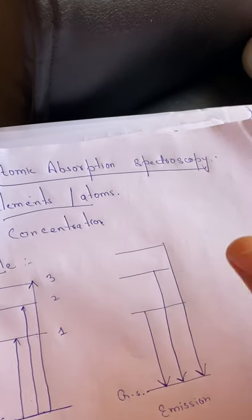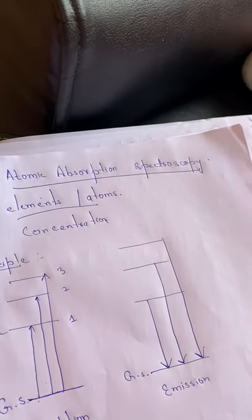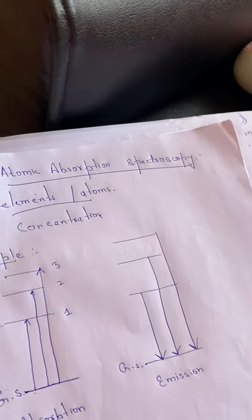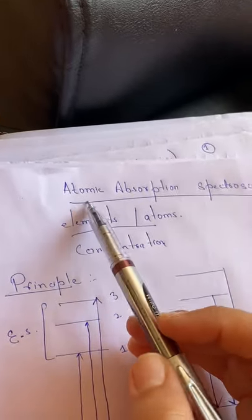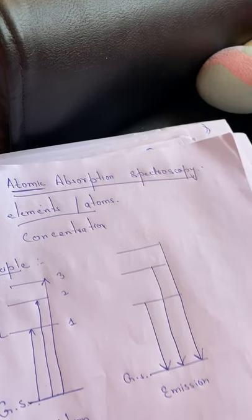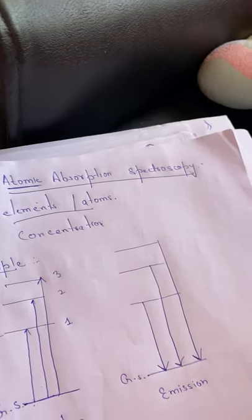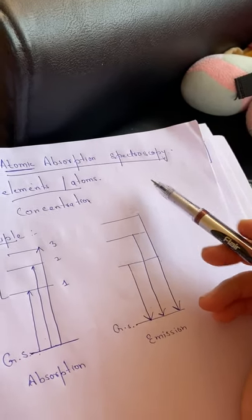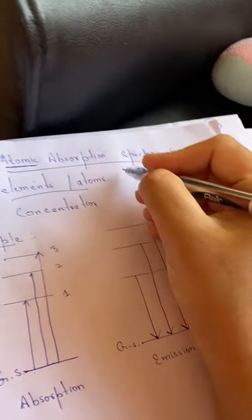Atomic absorption spectroscopy is another branch of spectroscopy. It is not different from what we have already studied, but it has a little difference - it involves atoms. Whatever spectroscopy you have studied before like UV visible, IR, NMR, in those types of spectroscopy we study molecules as a whole. We get information about the structure of molecules.